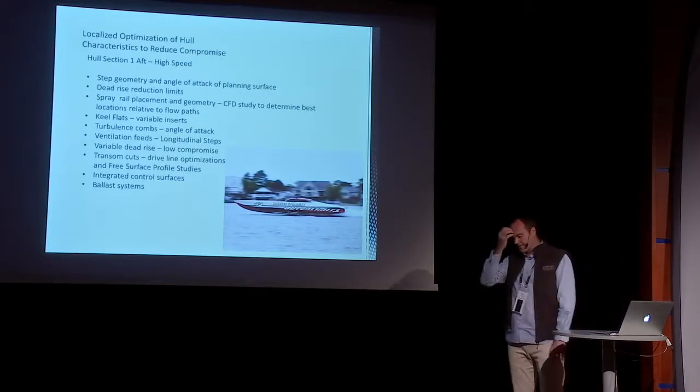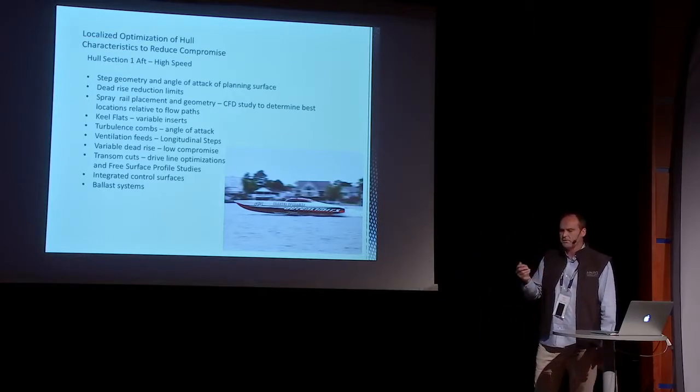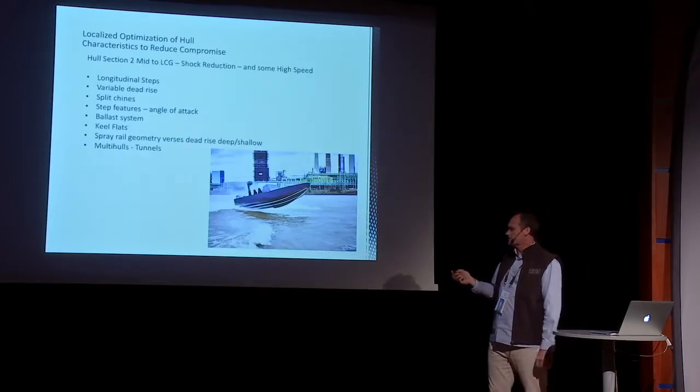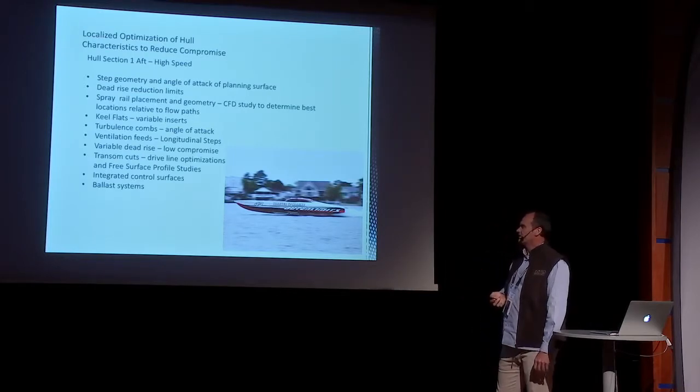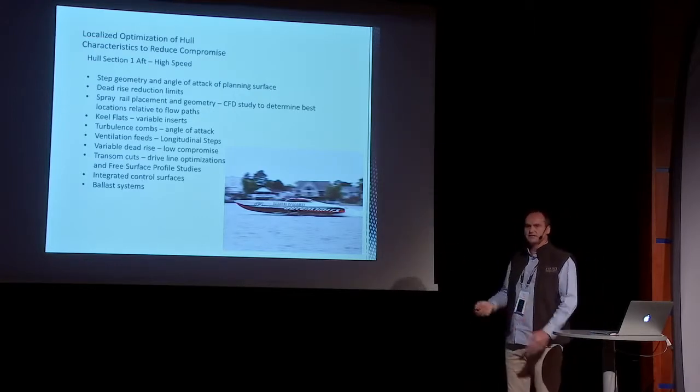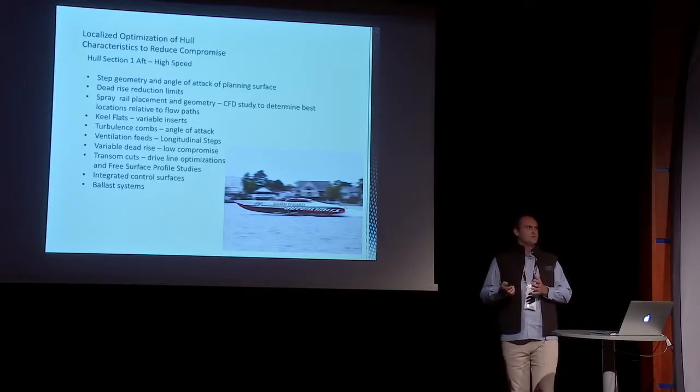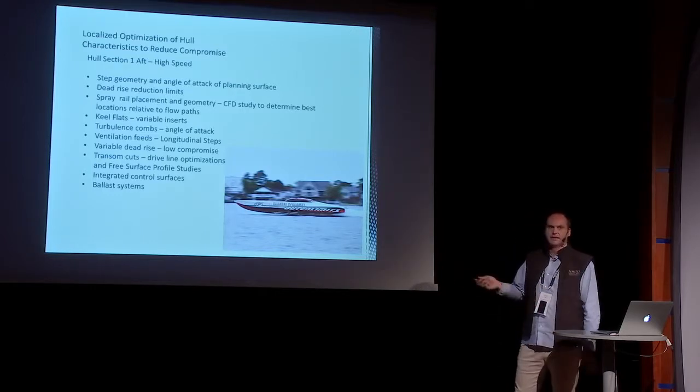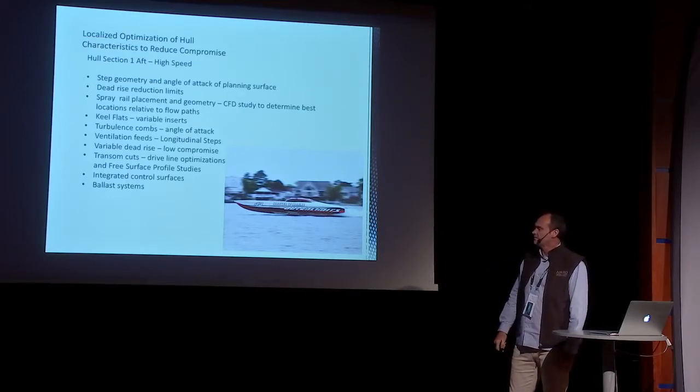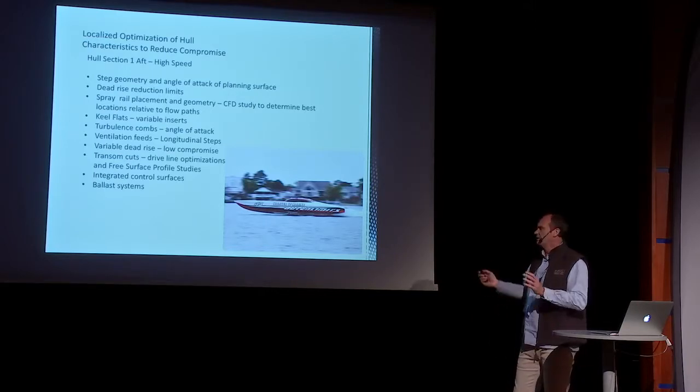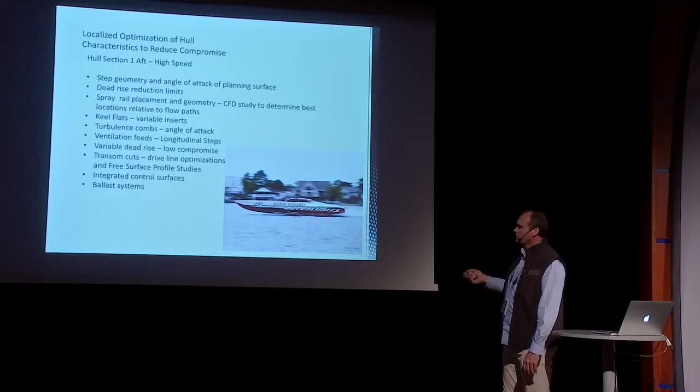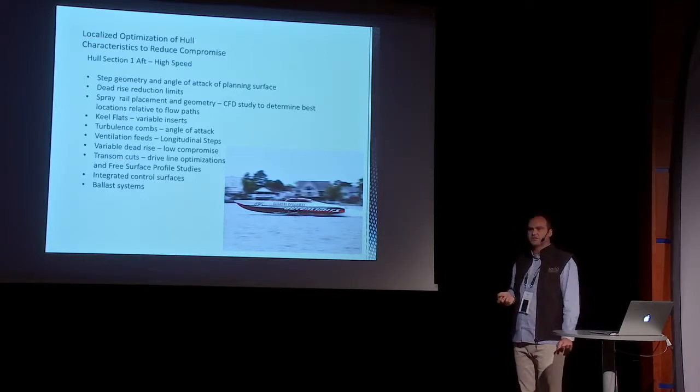We're looking at performance requirements based on the different hull sections. Now, looking at those three sections and how we can actually improve the compromise by localizing the study of each section. We've got an outer limits boat here. I think that's currently the world record holder monohull speed record. Great boat, but that's a one-compromise high-speed boat. That's what it's designed to do. Break records on flat water.